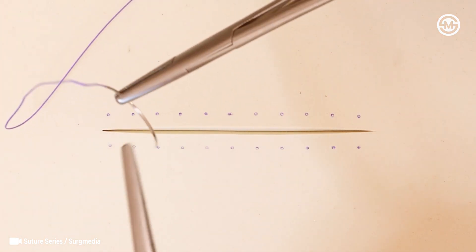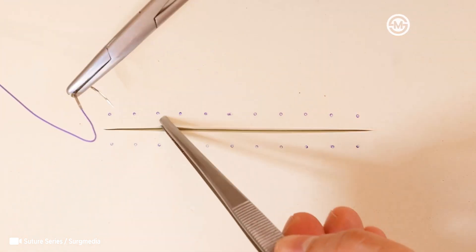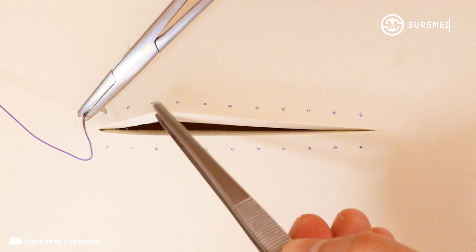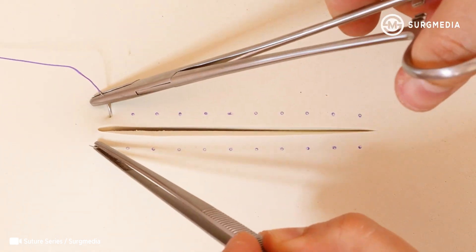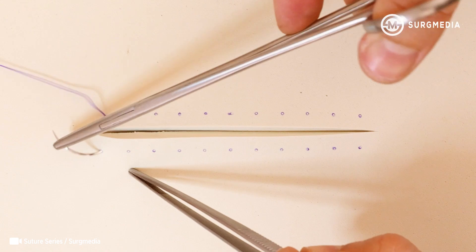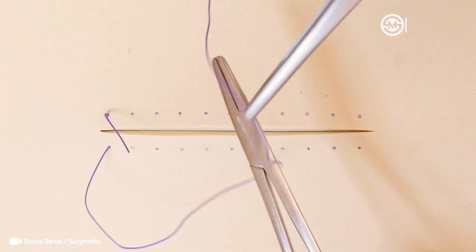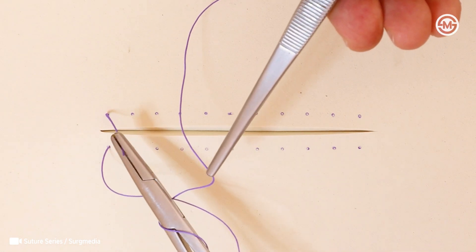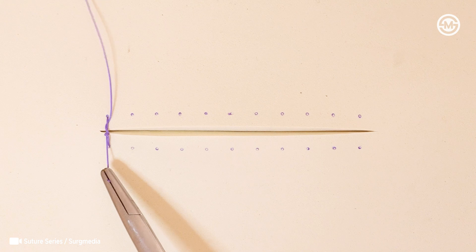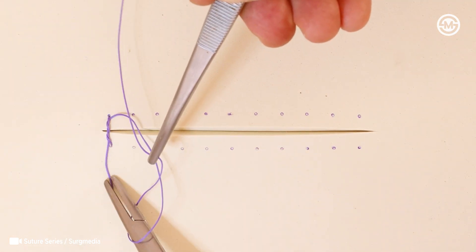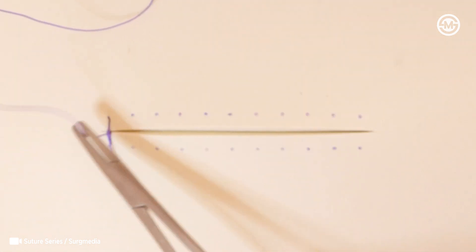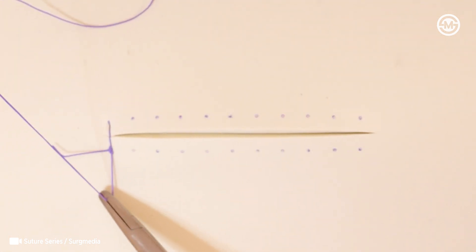Hey there, welcome back. Today we're going to learn about the simple continuous suture, a really handy technique that's used all the time in surgical wound closure. Whether you're in training or just brushing up on the basics, this is one of the first suturing methods you'll want to master. You might also hear it called the baseball stitch, and that's because the pattern it creates looks kind of like the stitching on a baseball.